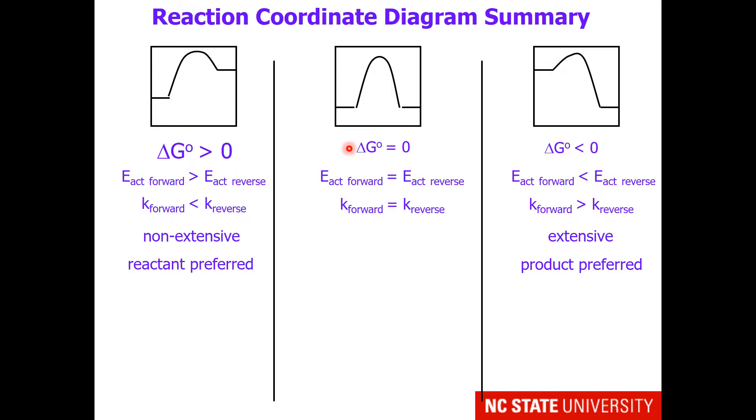Then, of course, one can be in the middle, where delta G° is equal to zero. The energy of activation forward will be equal to the energy of activation reverse and the rate constant forward will be equal to the rate constant reverse.